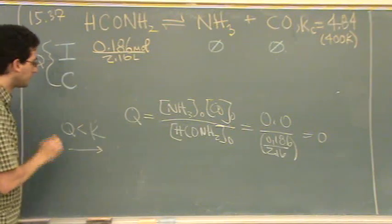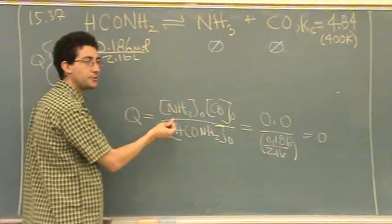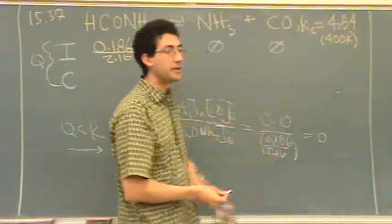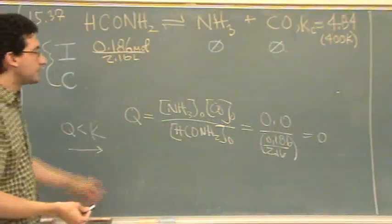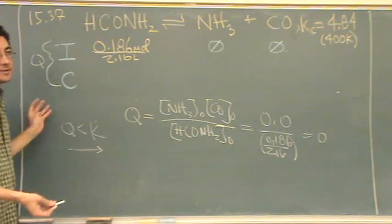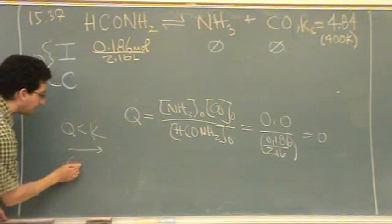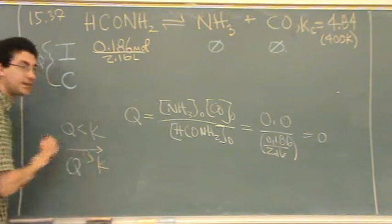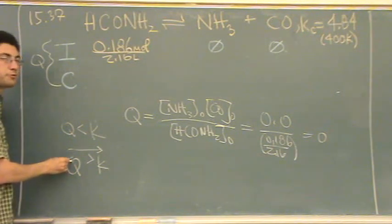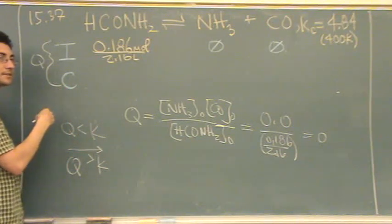Because Q is smaller than K, the numerator mathematically is too small — it has to be big enough so that the expression ends up equaling four. So we need more products; it has to shift to the right. The opposite would be true if Q were greater than K: it would have too many products, so it would have to shift back to the left to get rid of products and make more reactants.